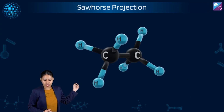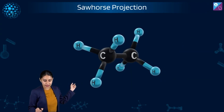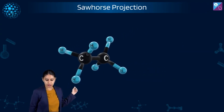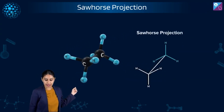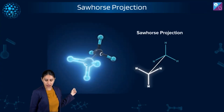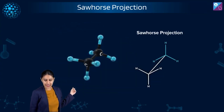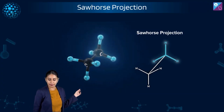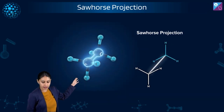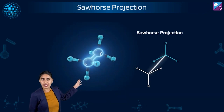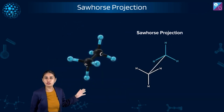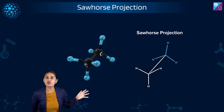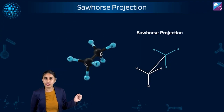Observe the sawhorse projection yet again. Again, I have taken ethane. See how the first carbon is highlighted, then check the second carbon being highlighted, and check this carbon-carbon sigma bond being highlighted. This is how we represent sawhorse projection.